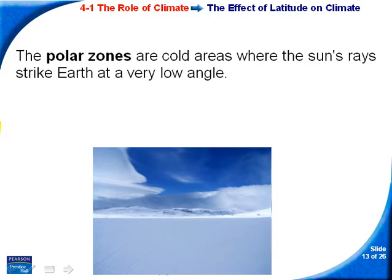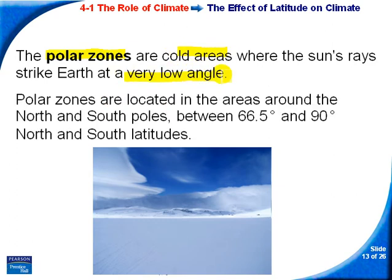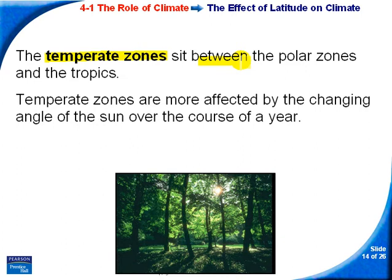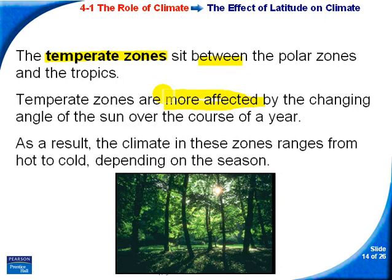The polar zone is cold, with sunlight at a very low angle almost the entire year. The temperate zone lies between the polar zone and the tropics — this is where we live. The angle of the Sun changes over the course of the year, producing the biggest temperature swings. We can have a 90°F day on July 21st and an 11°F day on January 21st, whereas the temperature range is much less in the tropics and the polar zone. The temperate zone ranges from hot to cold depending on the season.